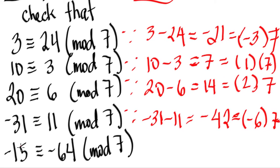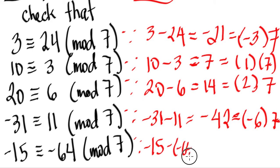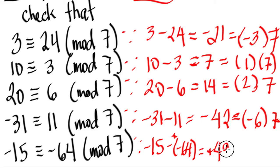Now a slightly more challenging example: negative 15 is congruent to negative 64 modulo 7. Because negative 15 minus negative 64 equals positive 49 — since it's 64 minus 15. And positive 49 equals 7 squared, which is clearly 7 times 7. So that is confirmed.